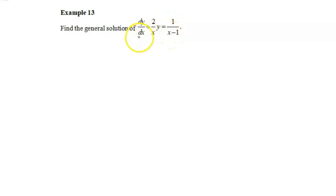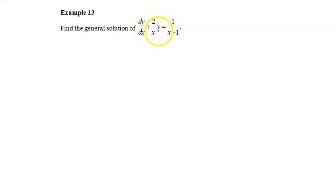For this differential equation, it is not with separable variables. It is obviously seen that the second term, which we have here 2 over x times y — when the x and y variables are in multiplication form, these variables cannot be separated. So here we need to use the integrating factor method.